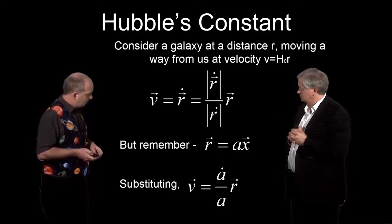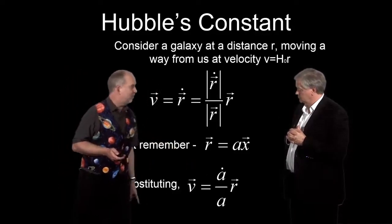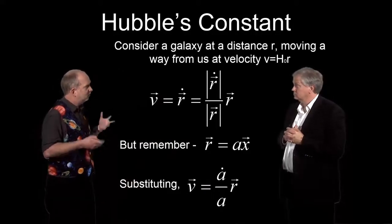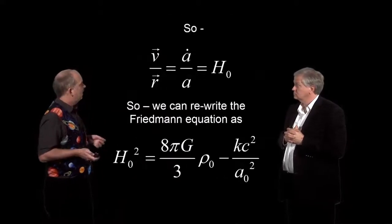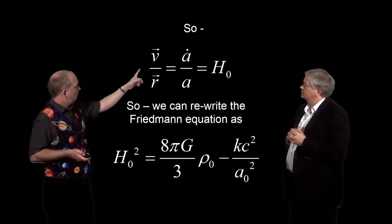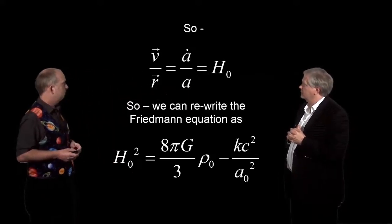Yes, it is. So a dot over a, the rate of change of the scale factor divided by the scale factor, is going to be telling us how fast space is expanding. And indeed that's what we've got here. So the Hubble law there.